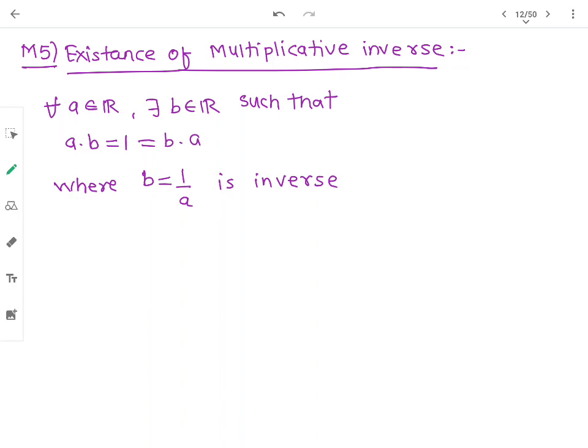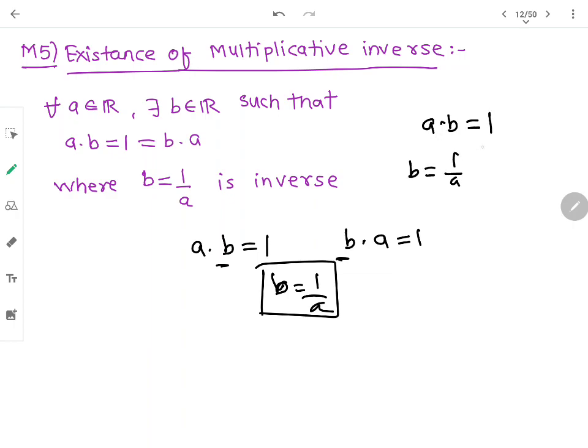Multiplicative inverse: for every a belongs to R, there exists b belongs to R such that their product is 1 - that is, the multiplicative identity should come. Otherwise b into a is also 1. So what will be the value of b? b equals 1 upon a - that is the inverse. The inverse means it gives us the identity. Their product gives us the identity. In addition, the identity was zero, here the identity is 1. So the inverse will be 1 upon a. If a into b equals 1, what is the value of b? 1 upon a - it's common sense.